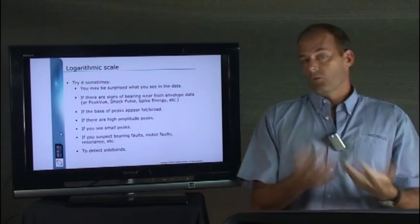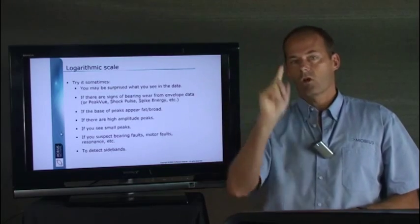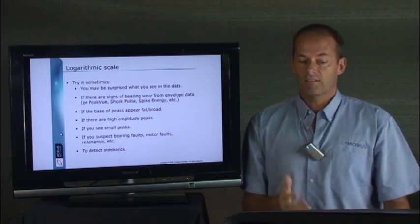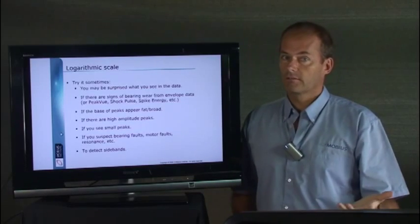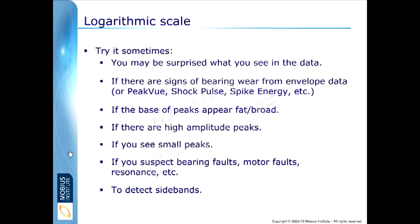Bottom line is, find out what that toggle button is in your software. There should be a shortcut key on your keyboard. The fact is that you'll be surprised what you see in the log spectrum. If there are signs of bearing wear you could look, toggle to log. If the base of the peaks appear a bit broader than you expect or they're lifting up a bit more than you expect, toggle to log and see what's going on. If there are really high amplitude peaks, toggle to log because those high amplitude peaks are pushing your linear scale up which means you can't see what's down the bottom. Toggle to log.